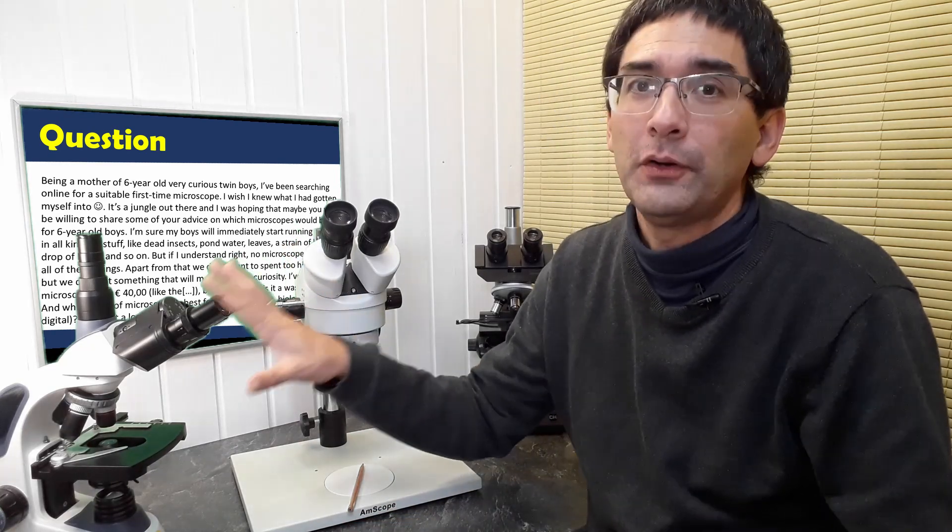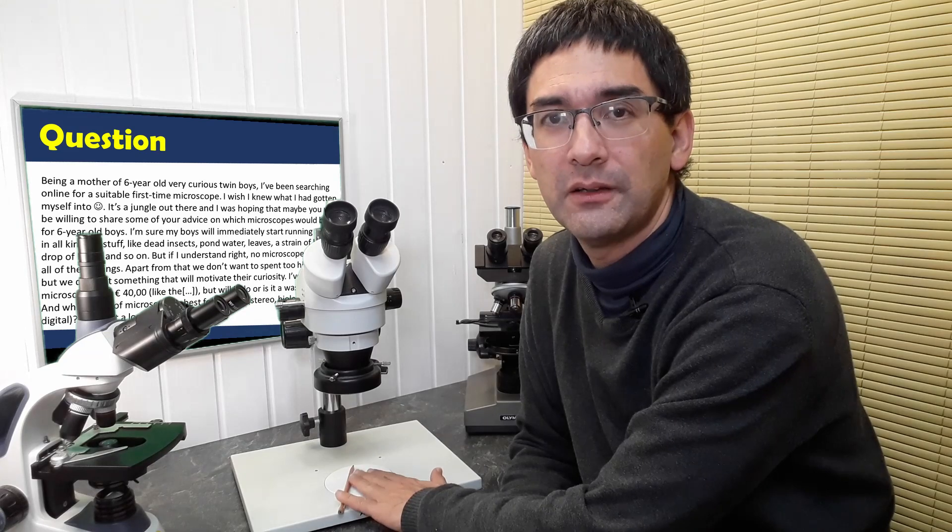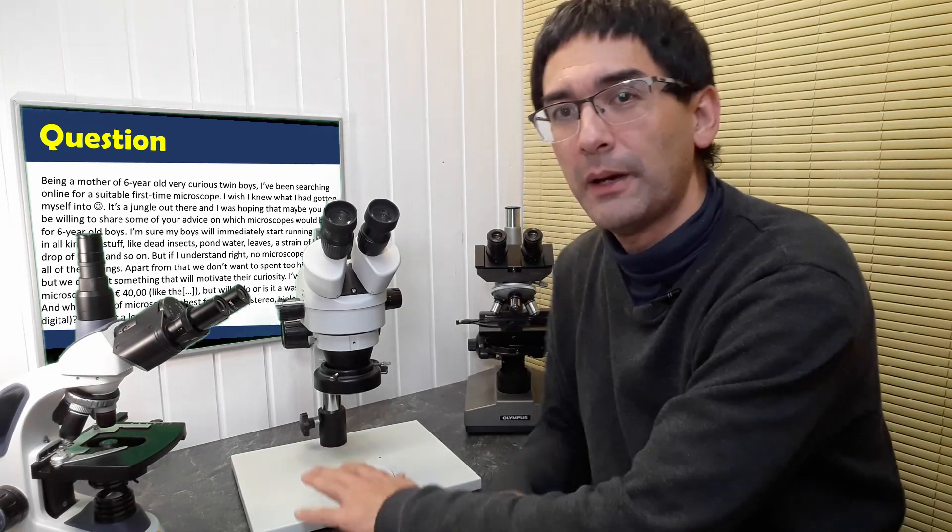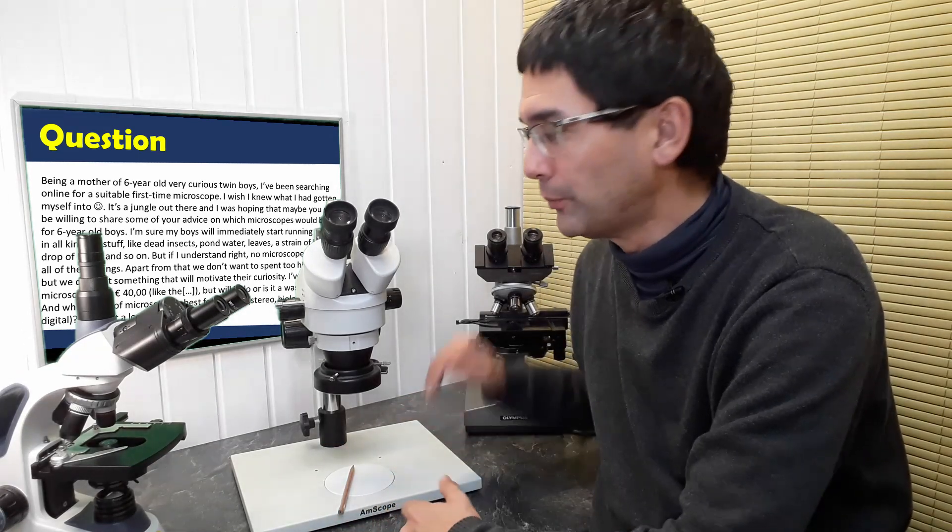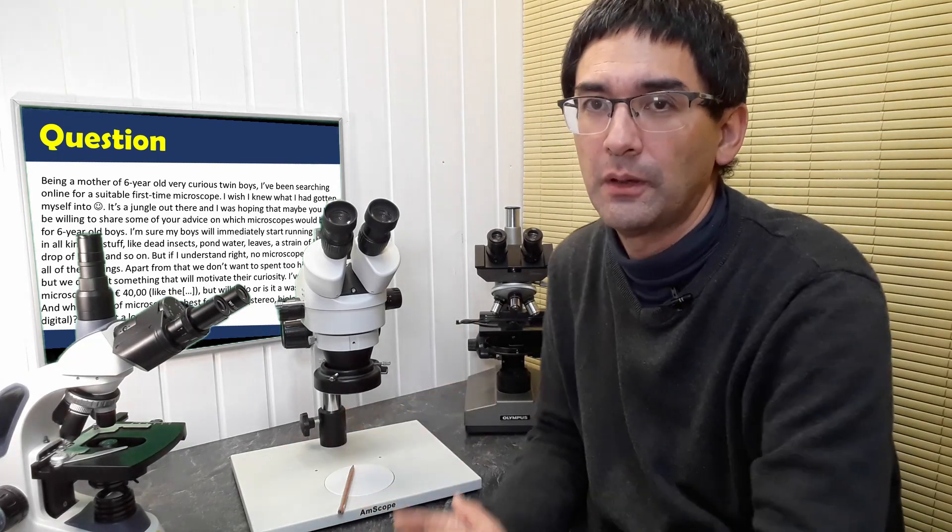And with those compound microscopes, like those over here, you need to work with the microscope slides. Of course, you can also put microscope slides here on this one. This one, by the way, does not have any light coming from the bottom, only from the top. But there are also stereo microscopes that have light from the bottom. It depends on what model you buy.